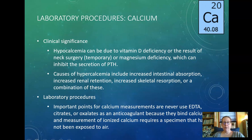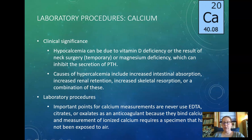Causes of hypercalcemia include increased intestinal absorption, increased renal retention, and increased skeletal resorption, or a combination of these. High calcium levels can also be associated with different cancers, so it's always good to investigate. For lab procedures: never use EDTA, citrates, or oxalates as anticoagulants because they all bind calcium — which means those specimens are completely useless for calcium determinations. You cannot run calcium on a purple top or blue top tube.